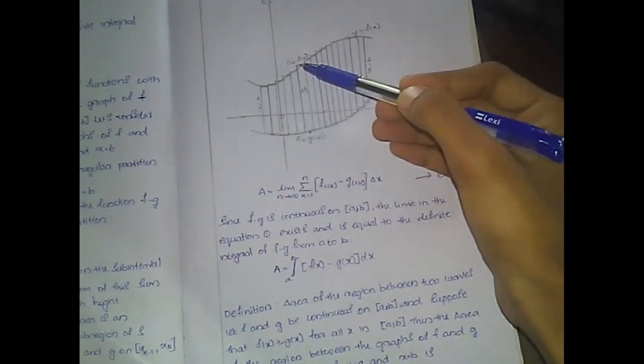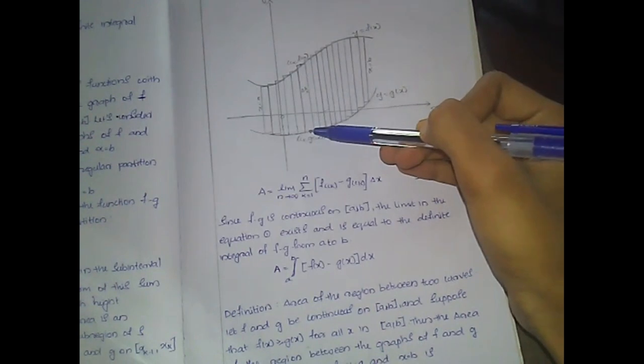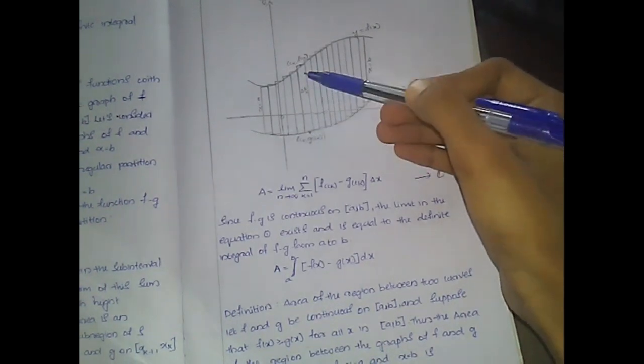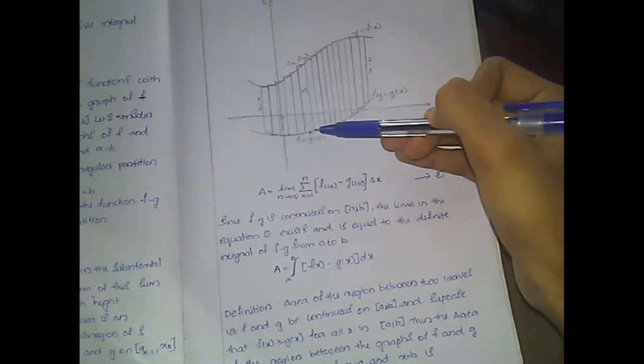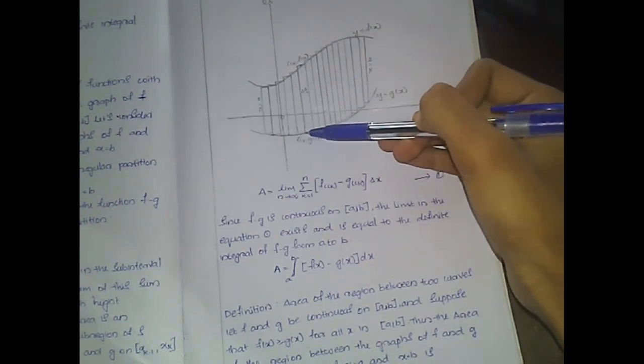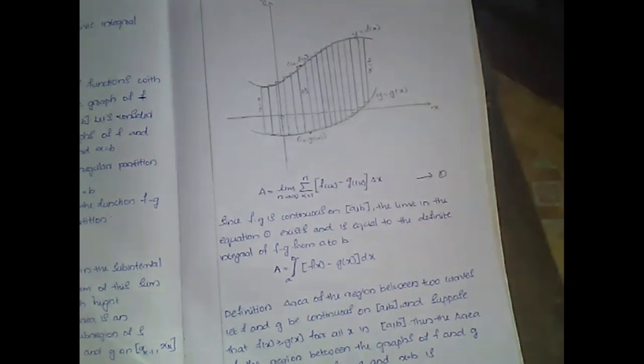The area of each sub-region can be approximated by the area of a rectangle whose width is delta x and whose height is f(ck) minus g(ck).